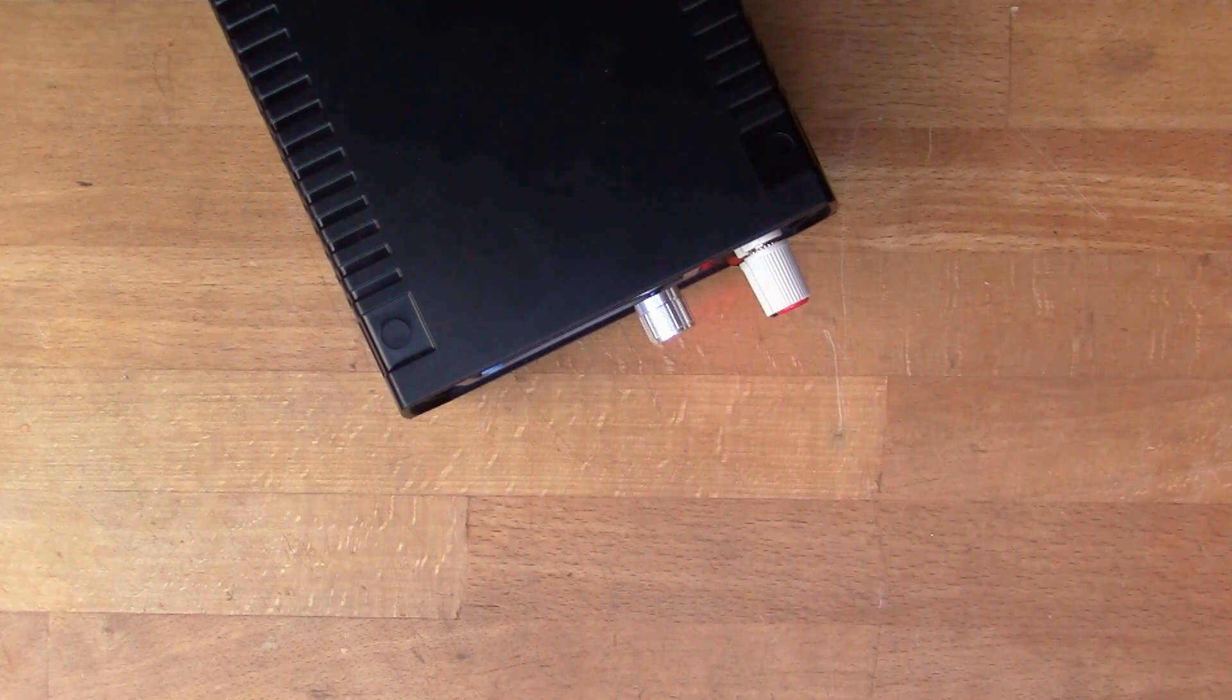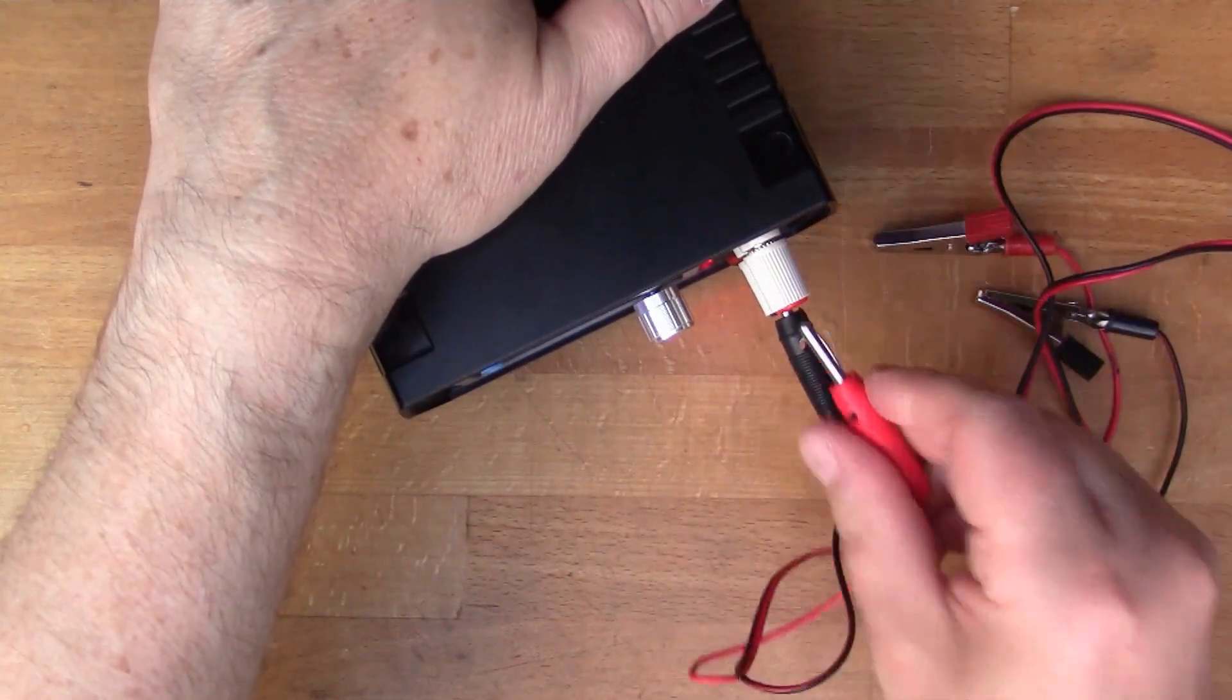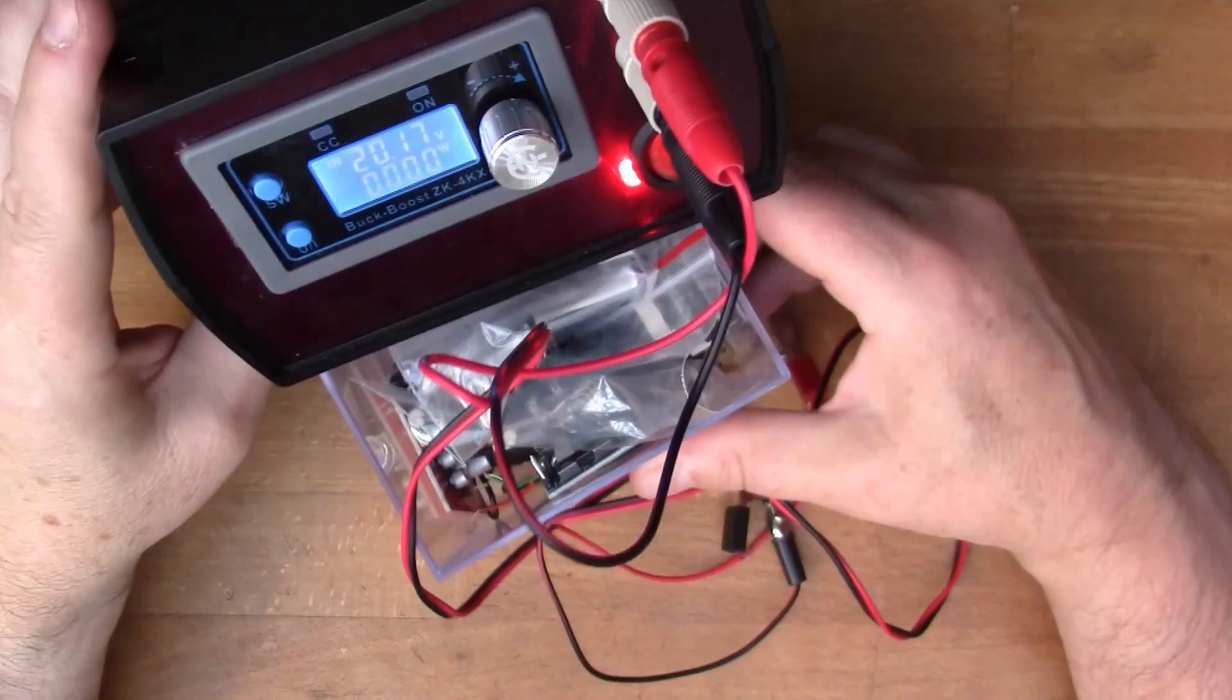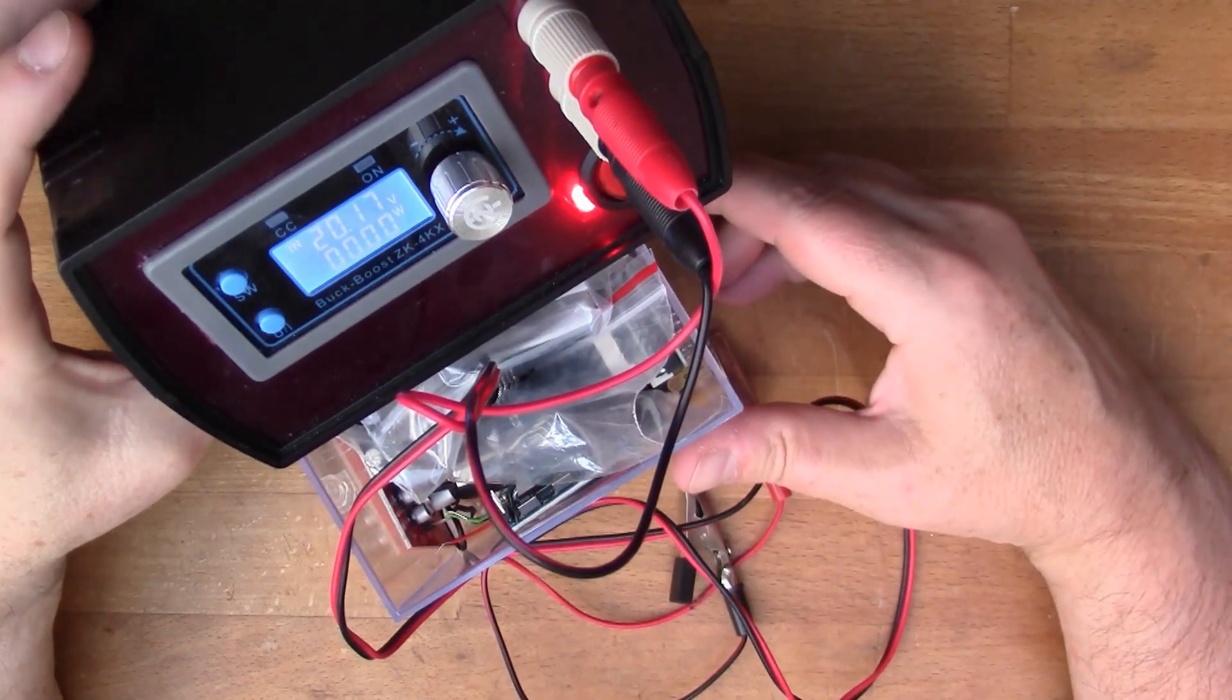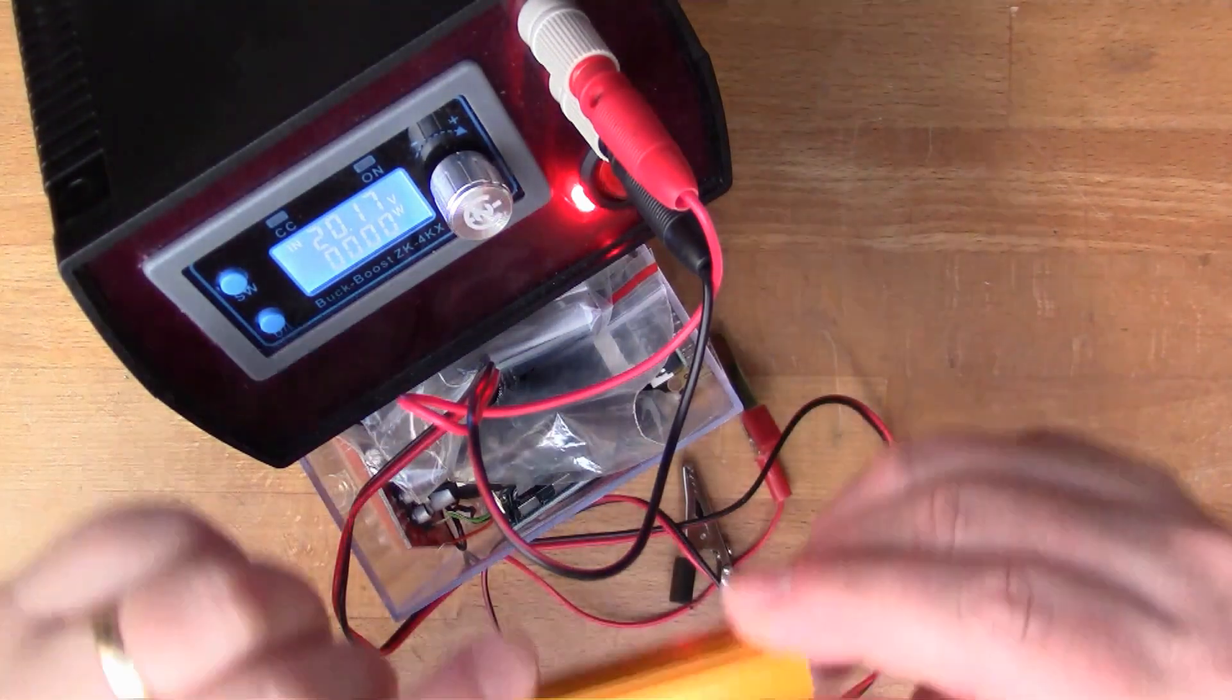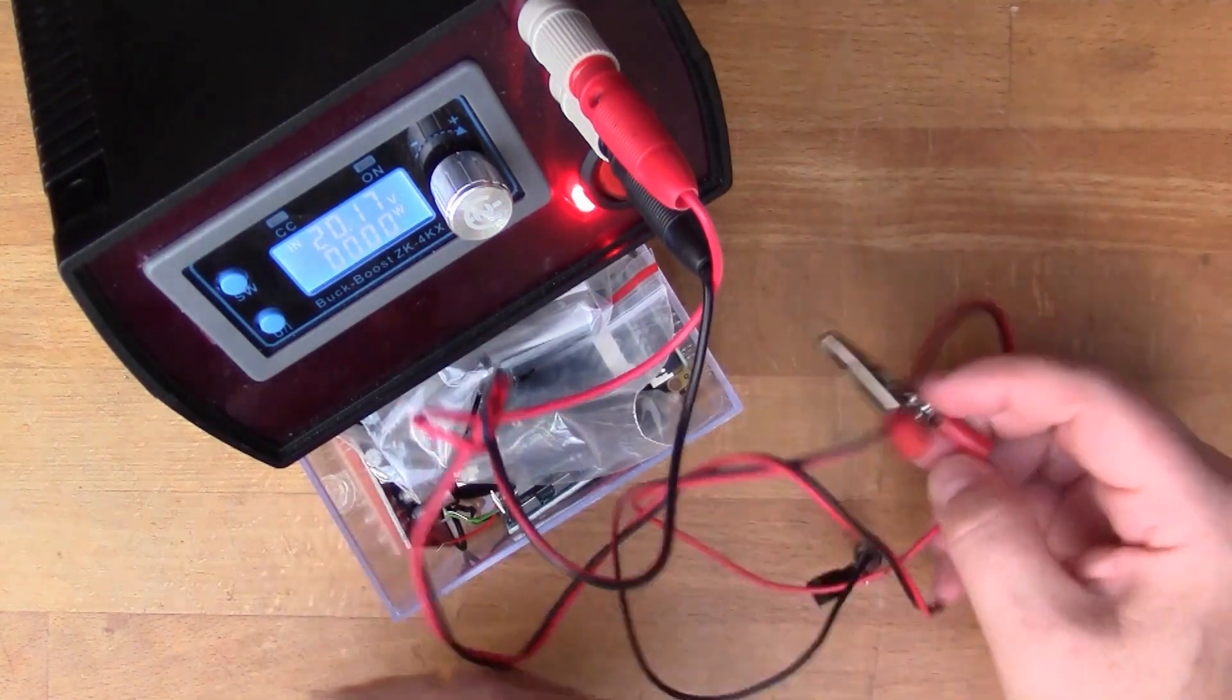What we could do now is put a load on this and see what happens. Perhaps I can angle this up so you can see the display. I've got a box of resistors here. This is quite a nice one, a big power resistor, 100 watts, 1 ohm. So we'll connect that in and see what happens.